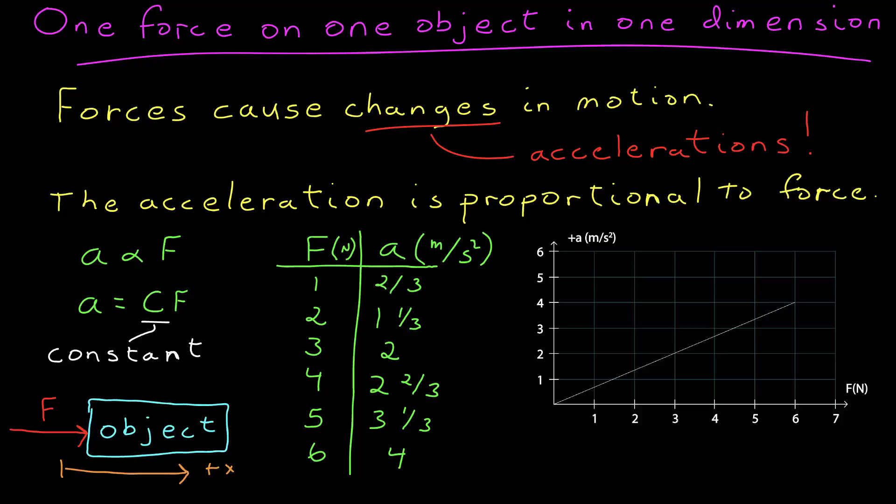Now, I can plot this, and I'm going to get a straight line, a graph that looks like this. Acceleration as a function of force from zero up to six Newtons. The slope, then...